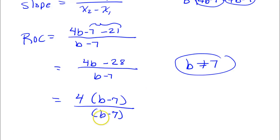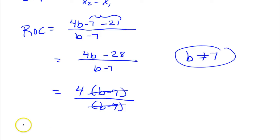Now I'm noticing that this b minus 7 factor will, in fact, cancel out. So we can cancel out the b minus 7. So that means that the rate of change is 4, as long as b does not equal 7, because that would be undefined.